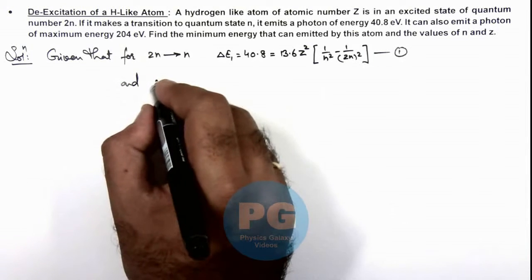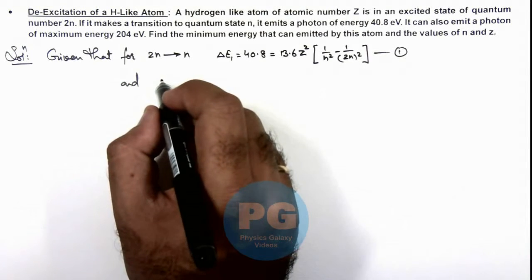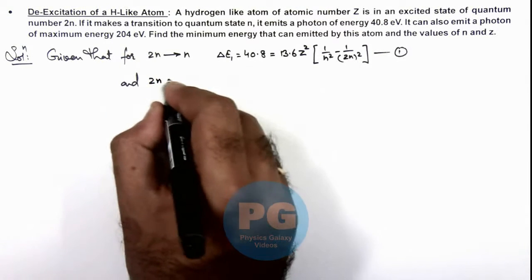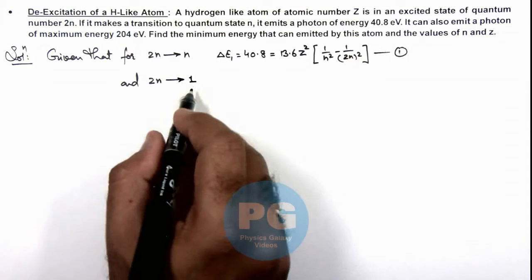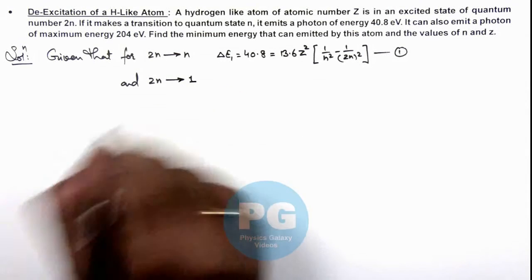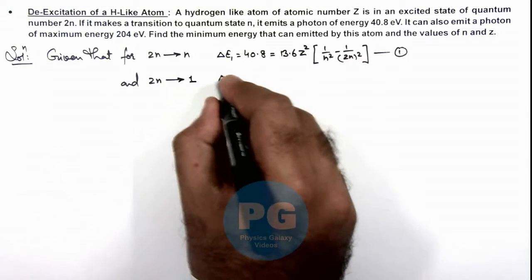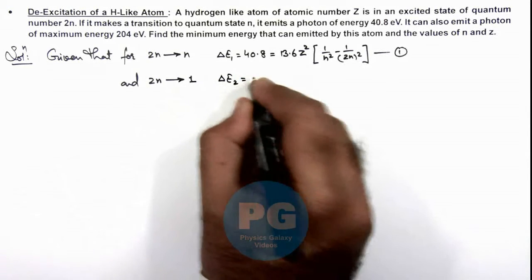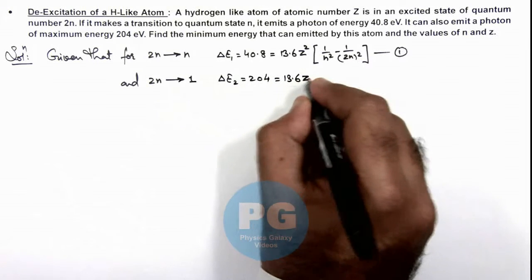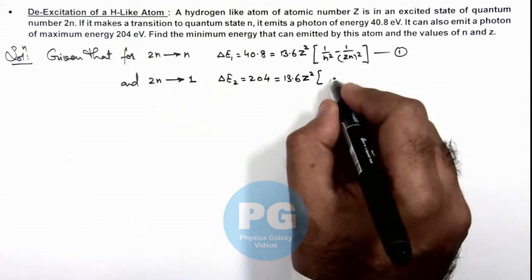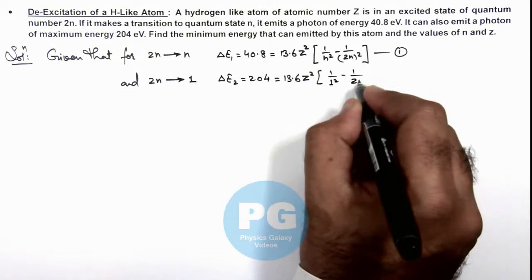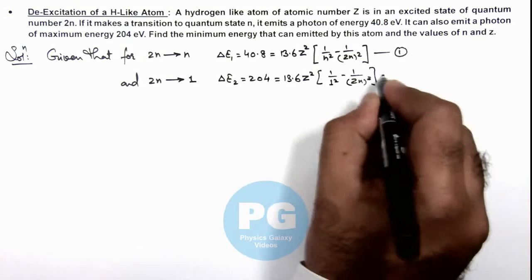We are also given that the maximum energy emitted will be possible when the atom de-excites directly from 2n to n = 1, that is the ground state. The maximum energy released in this transition is ΔE₂, which is 204 electron volts. This can be written as 13.6 × Z² × (1/1² − 1/(2n)²). This is our equation 2.